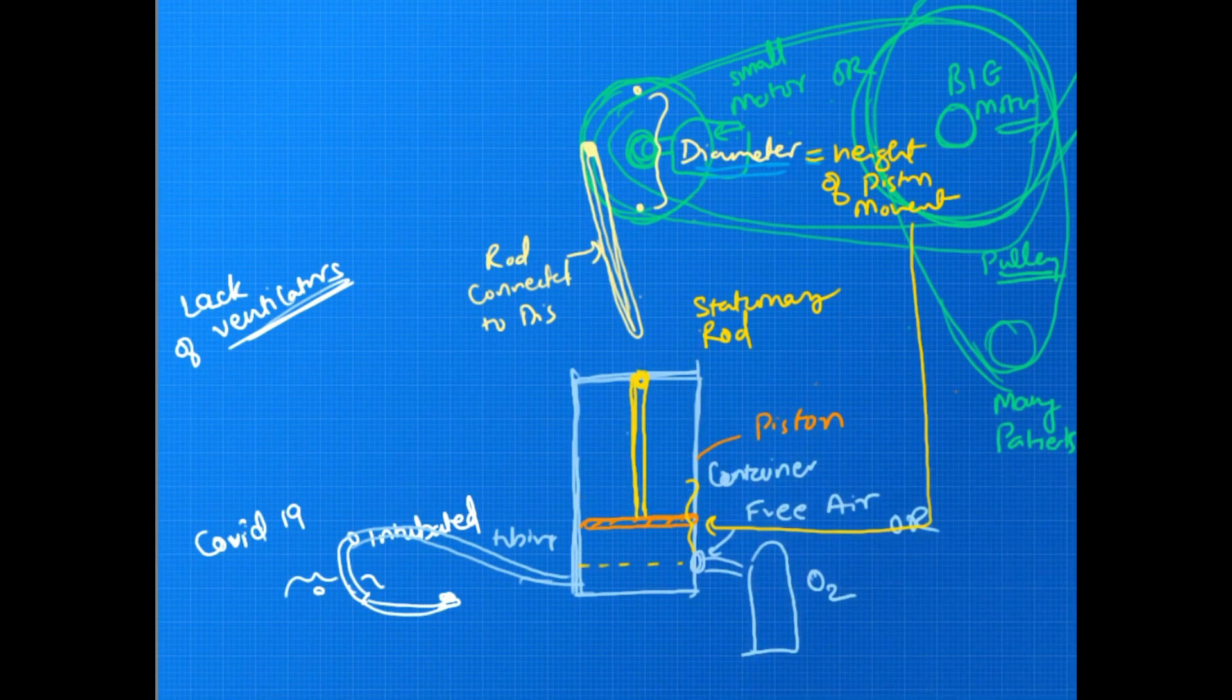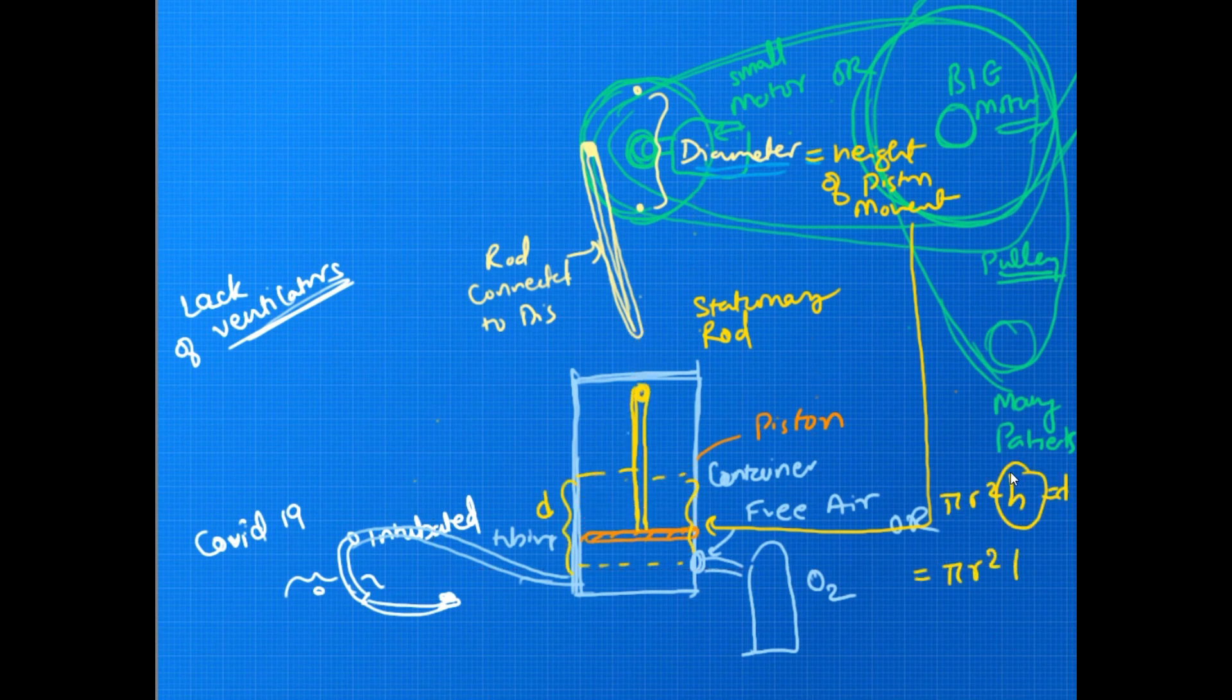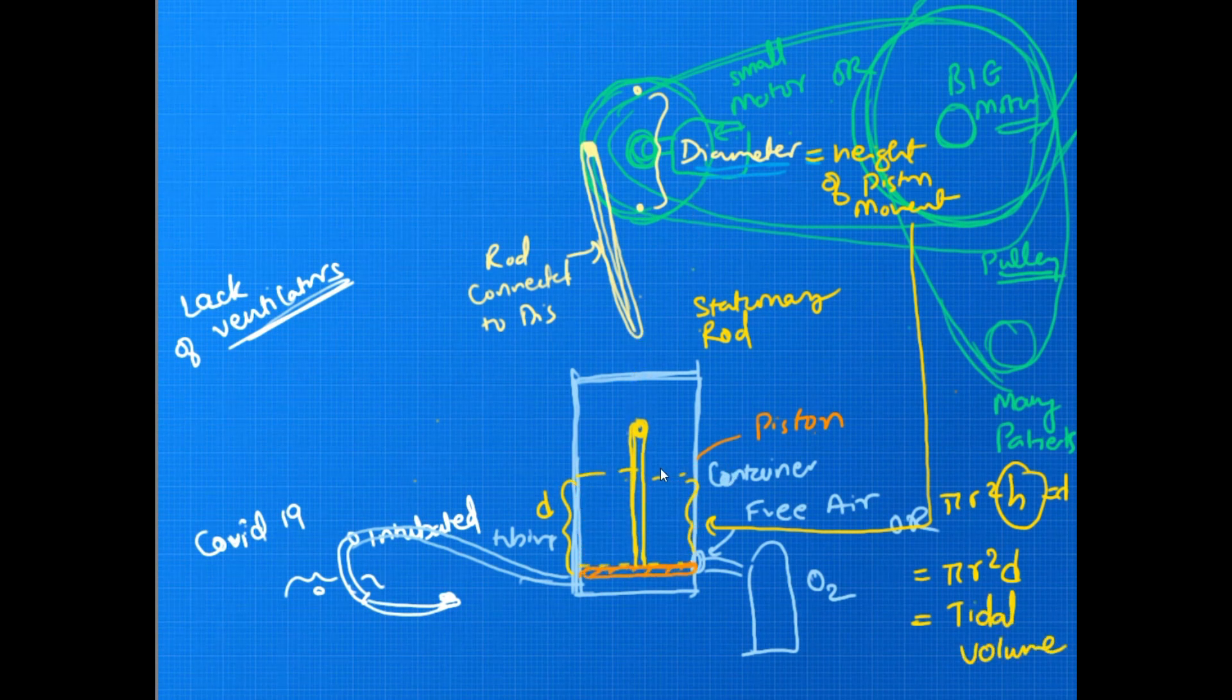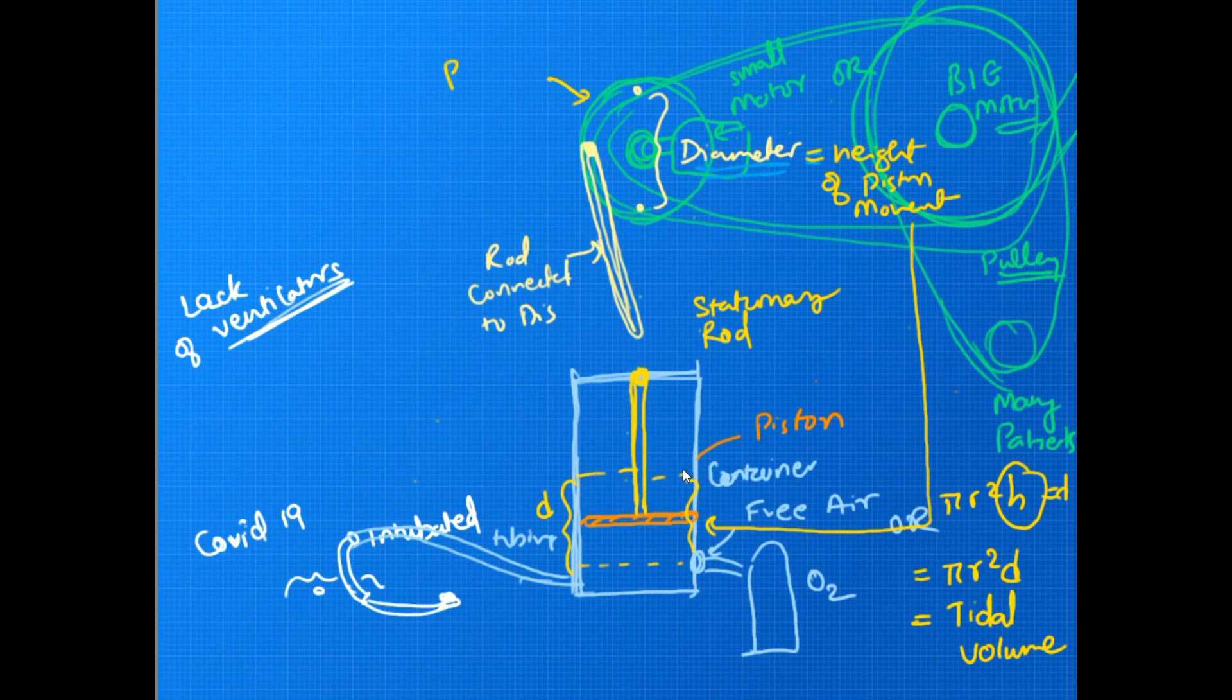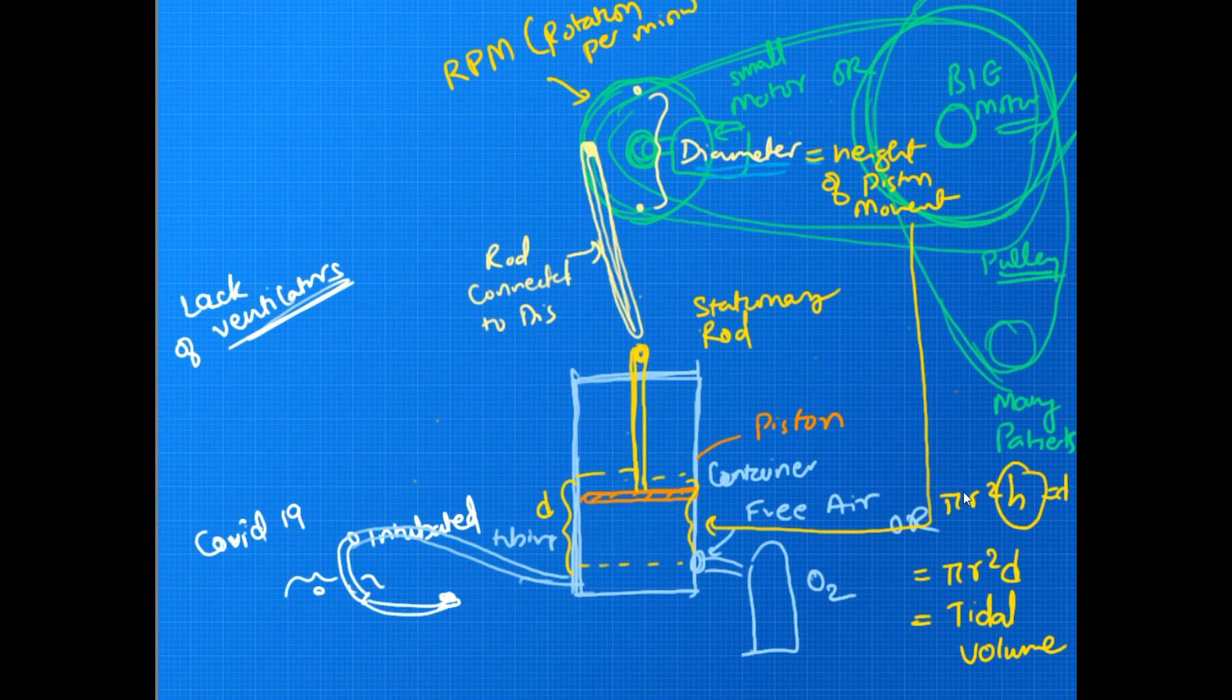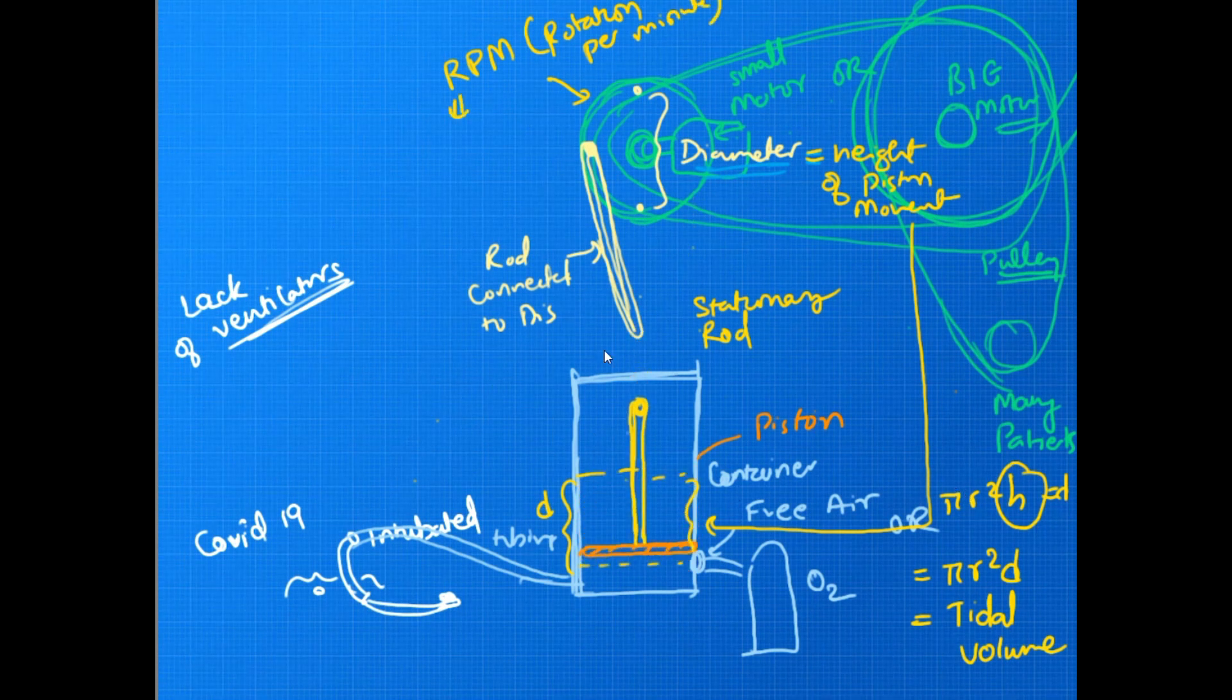If this was another shape like a rectangular, then obviously the formula will change and so you will need to compensate it like that. So pi r squared h, here h will be the diameter of the big disc and r would be the radius of this cylinder. Now this will be the tidal volume of the patient.